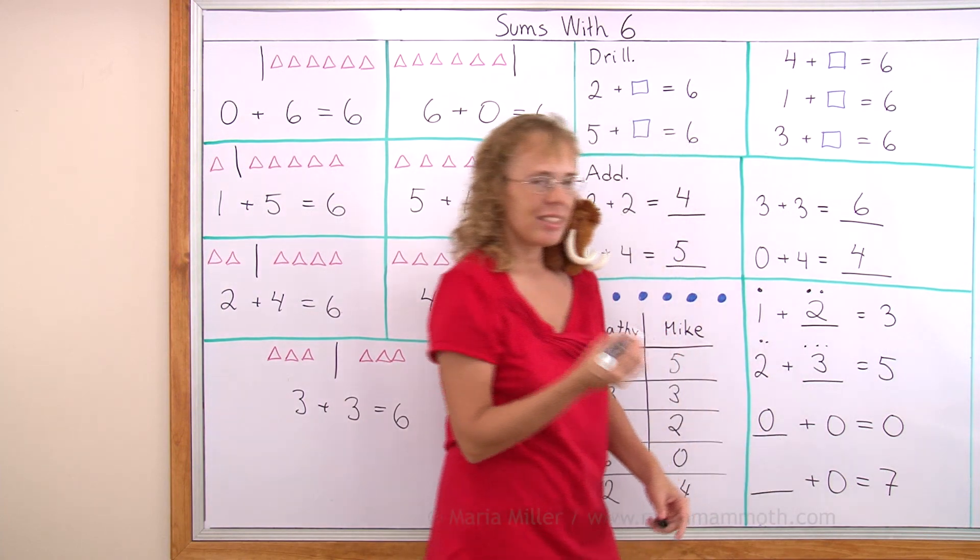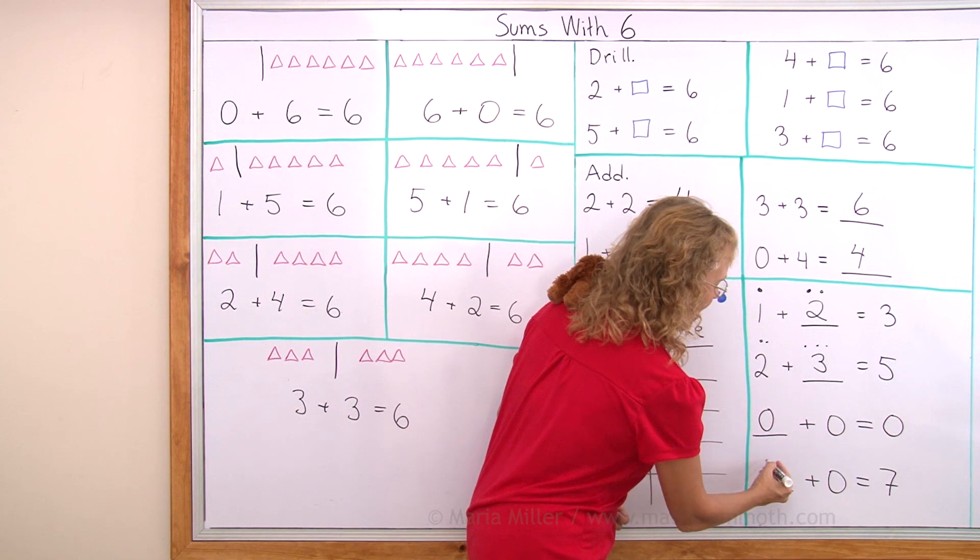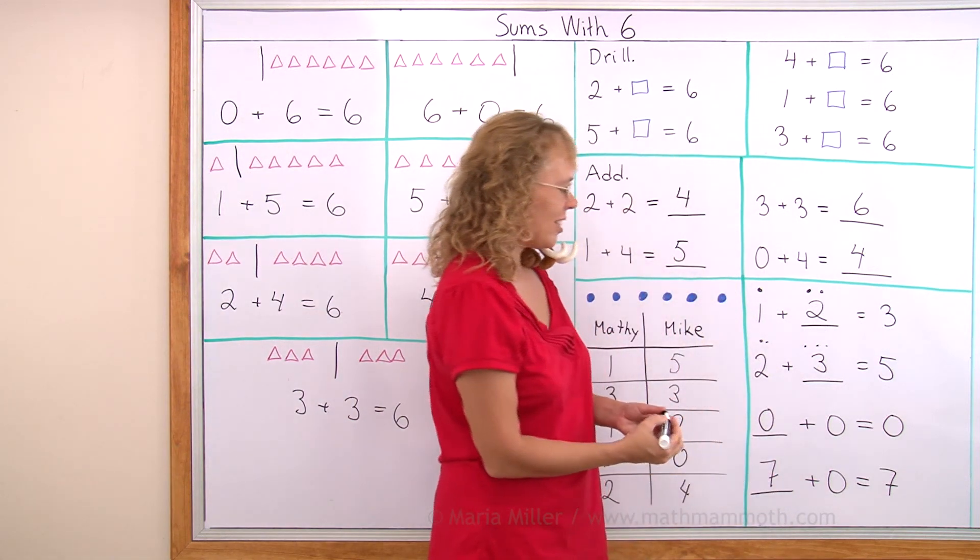How many plus zero makes seven? Okay. Can you solve it? A little tricky too, but it is seven. Seven and zero would make seven.